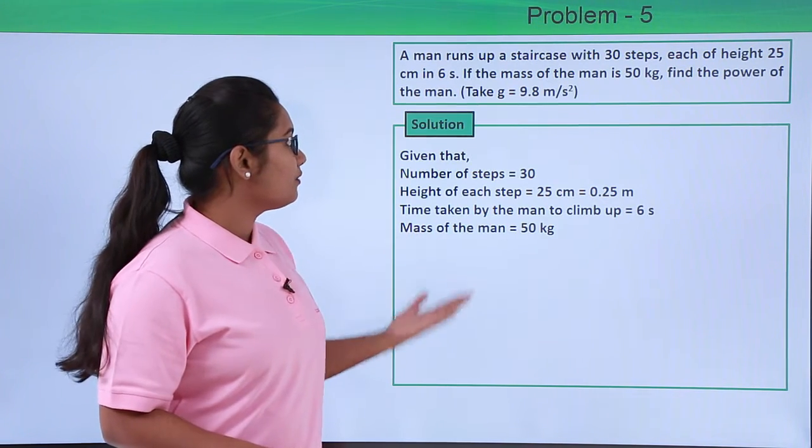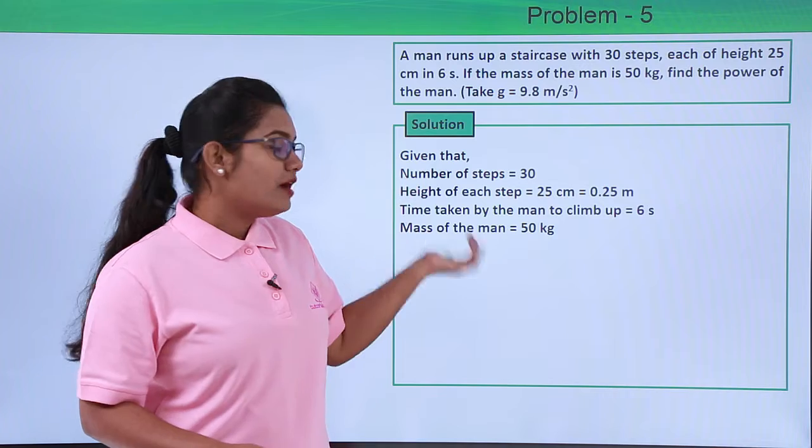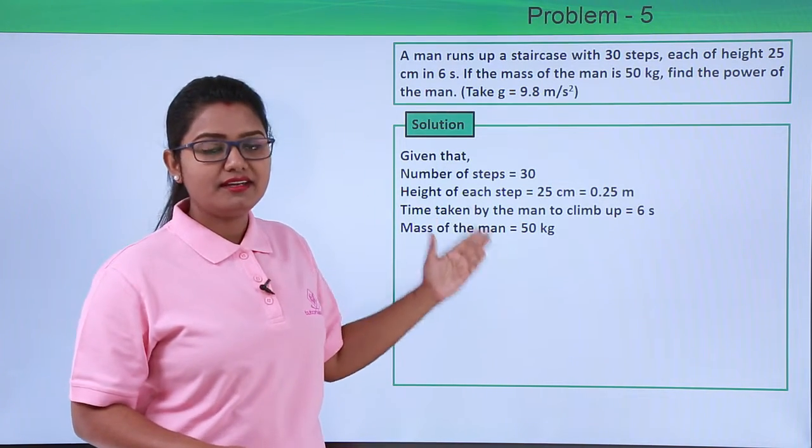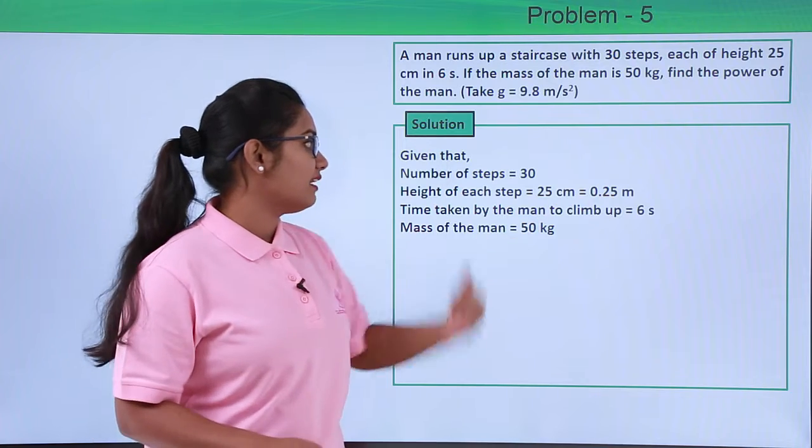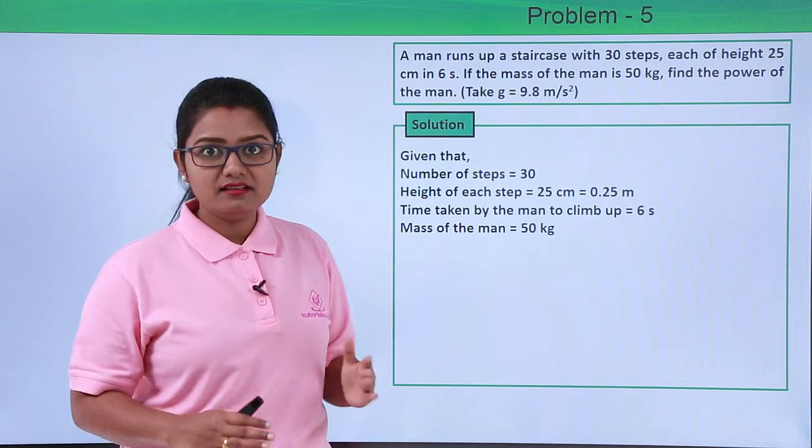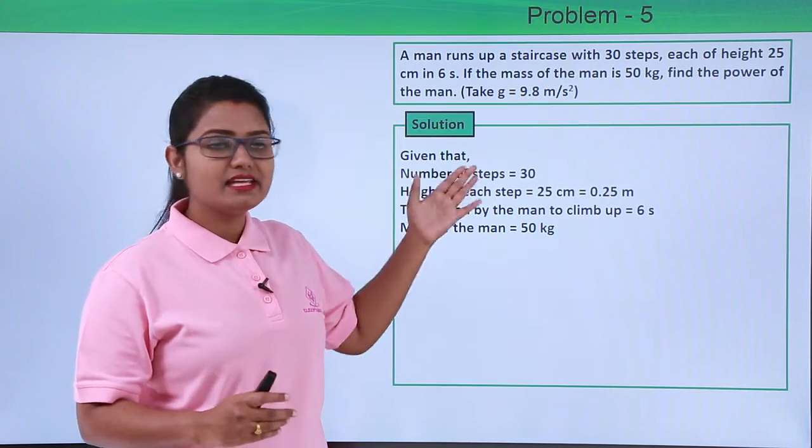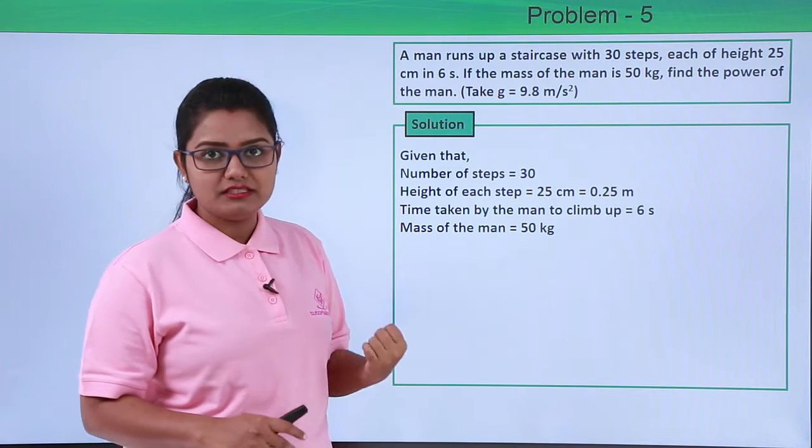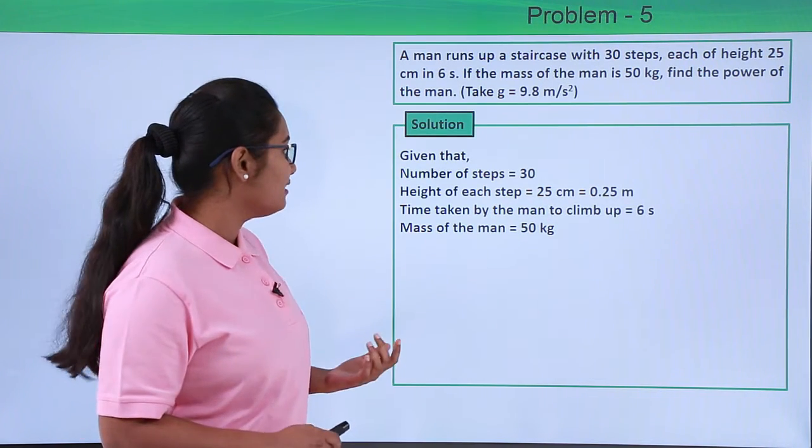Now what we need to find out from this information is what is the power of the man if he is able to do this much amount of work in 6 seconds. First of all, we need to calculate what is the work that the man has done in climbing up this staircase with 30 steps, each step measuring 25 centimeters.